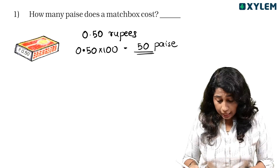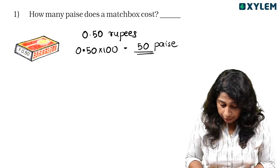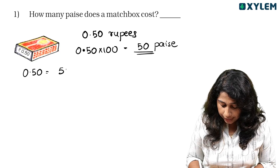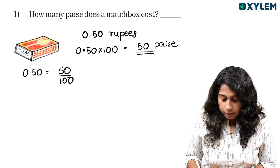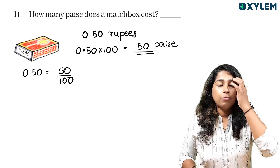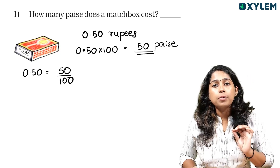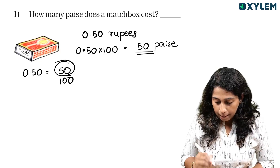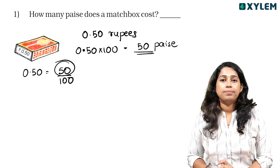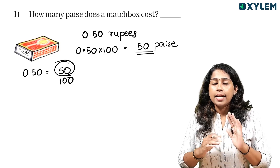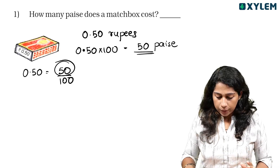This is another way to say 0.50. This 0.50 is 50 by 100. Correct? 50 by 100. This 50 by 100 is 50 by 100. Correct? Easy — no confusion.